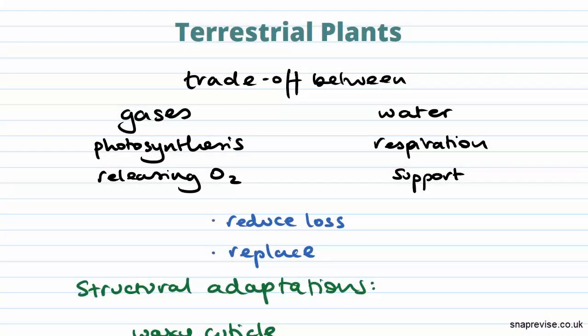So in terrestrial plants there will always be some kind of trade-off between getting gases into the plant and water. Now the gases, namely carbon dioxide, is really required for photosynthesis, but it's also important that gases can be moved out of the plant so that during photosynthesis, for example, it can release oxygen.